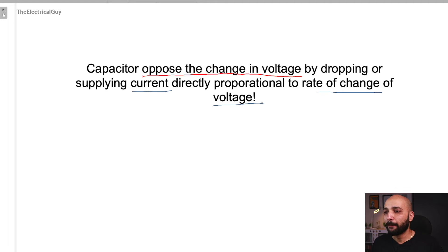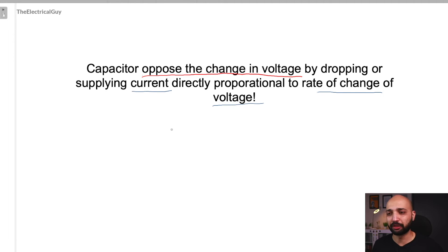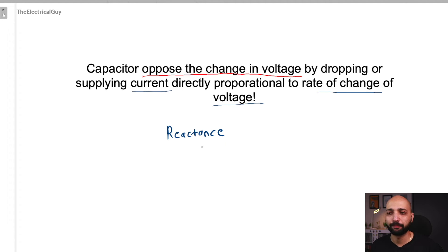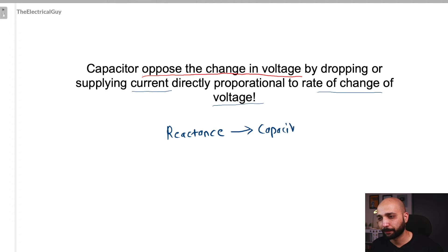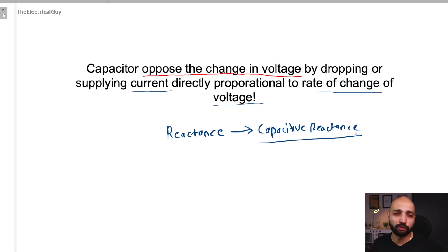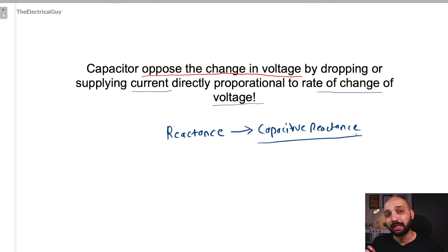This type of opposition that a capacitor offers is definitely very different from what a resistor offers, and for that purpose we need a separate, dedicated name for this kind of opposition — hence we call it reactance, specifically capacitive reactance. In the previous video we saw that reactance was offered by an inductor and hence the name was inductive reactance. Here it is offered by a capacitor and hence the name is capacitive reactance.